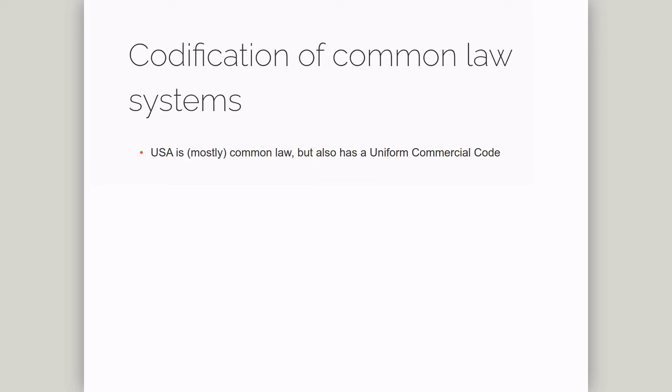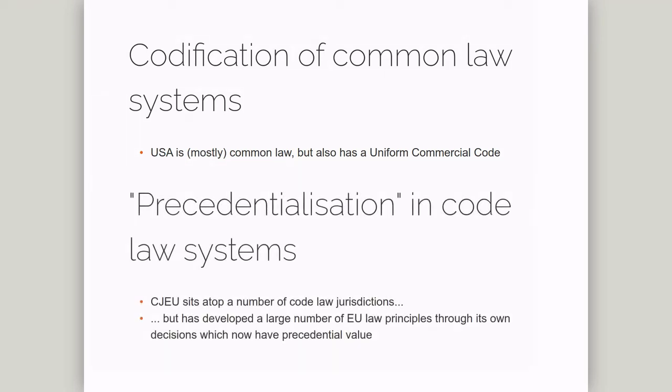Third, some code law systems have to deal with interpretative principles more commonly found in common law systems. Most of the member states of the EU are code law systems. You might therefore expect that the Court of Justice of the European Union, the apex court in the EU, would follow the same practices as code law courts. Whilst it does follow some practices, like banning dissenting opinions, the Court of Justice has been happy to treat its past decisions as establishing precedent, and important principles of EU law have been established by past decisions.